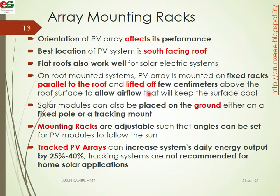Solar modules can also be placed on the ground on fixed poles or a tracking mount. With a tracking mount, the angle is automatically adjusted so the PV modules follow the sun. Tracking mountain racks are adjustable such that the angle can be set for PV modules to follow the sun. Tracking PV arrays can increase the system daily energy output by 25 to 40 percent.